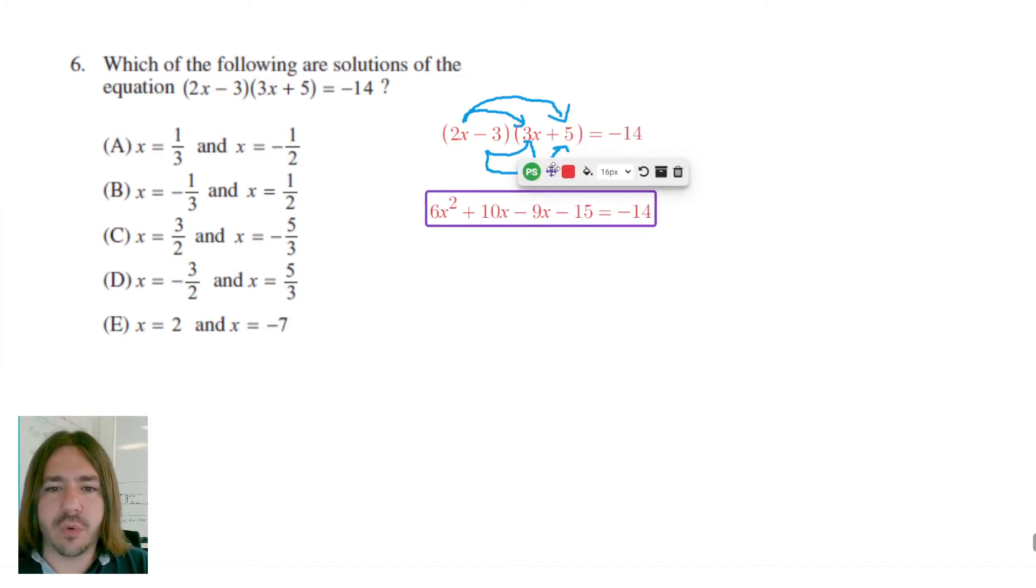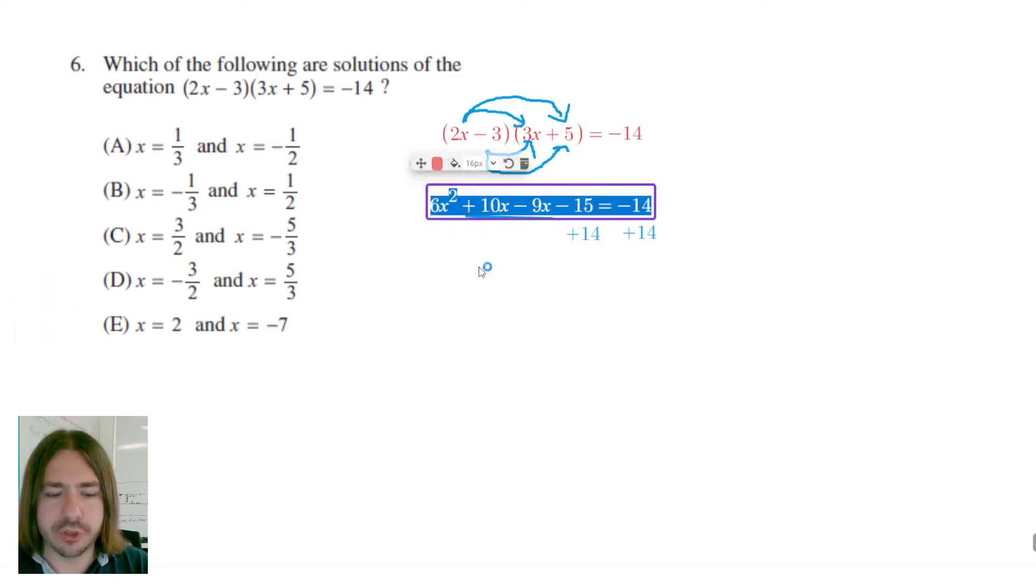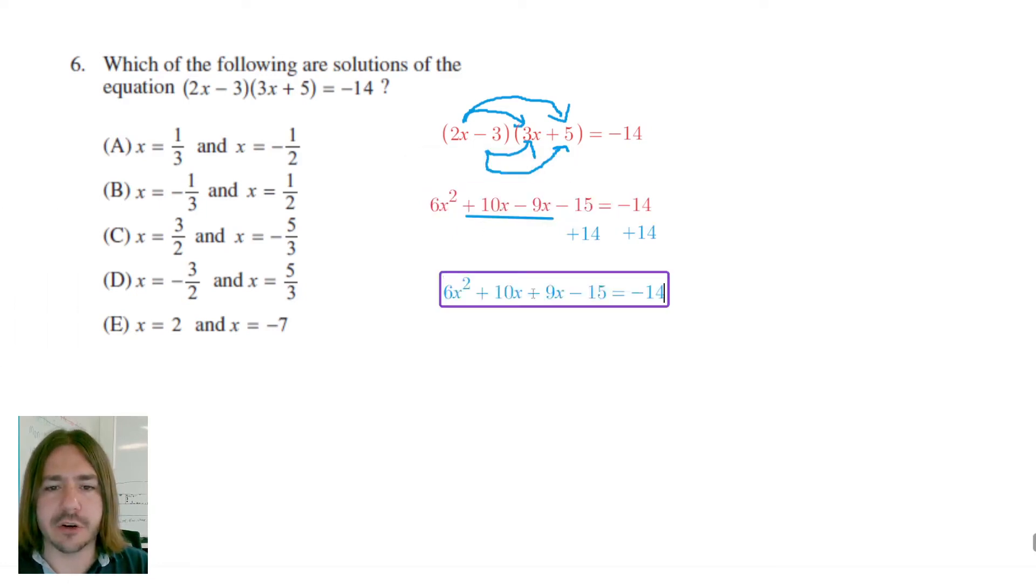So from here, we want to combine our like terms, and we've got two like terms here. We also want to move this negative 14 over to the other side, and we can do that by using the addition property of equality here. And we're going to add 14 to both sides. So I'm actually going to do kind of two steps in one here. The first step, I'm going to combine my like terms, 10x plus negative 9x.